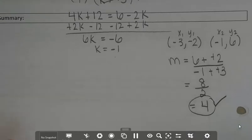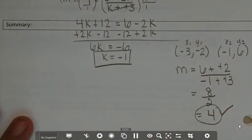So that checks out. k is negative 1, and we are done.